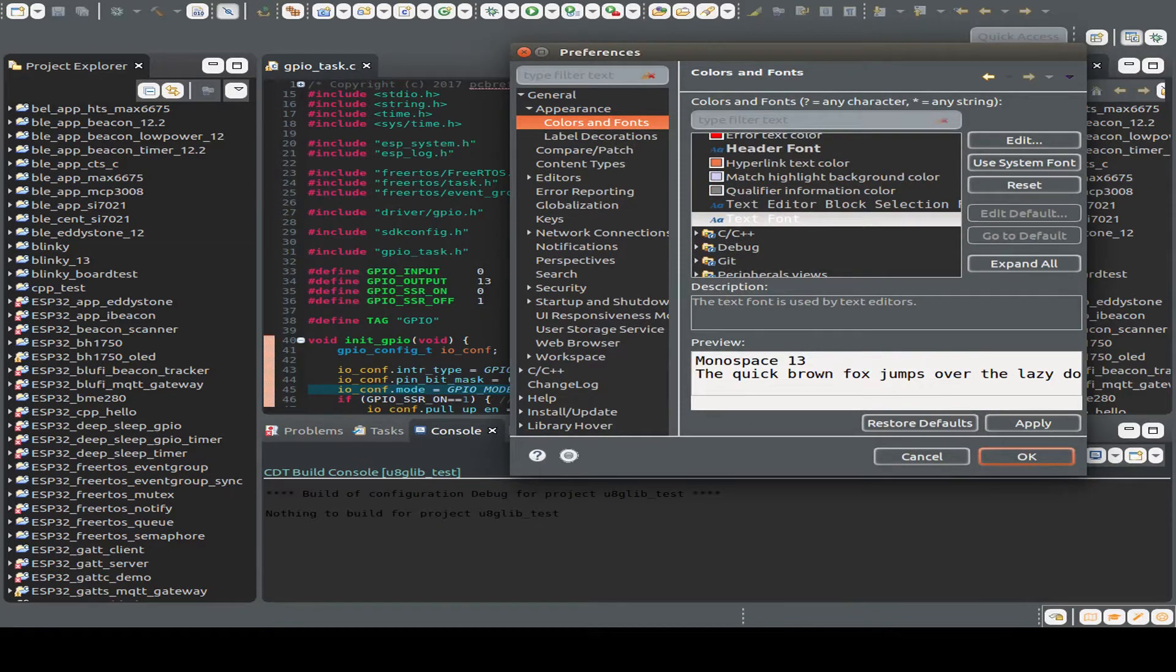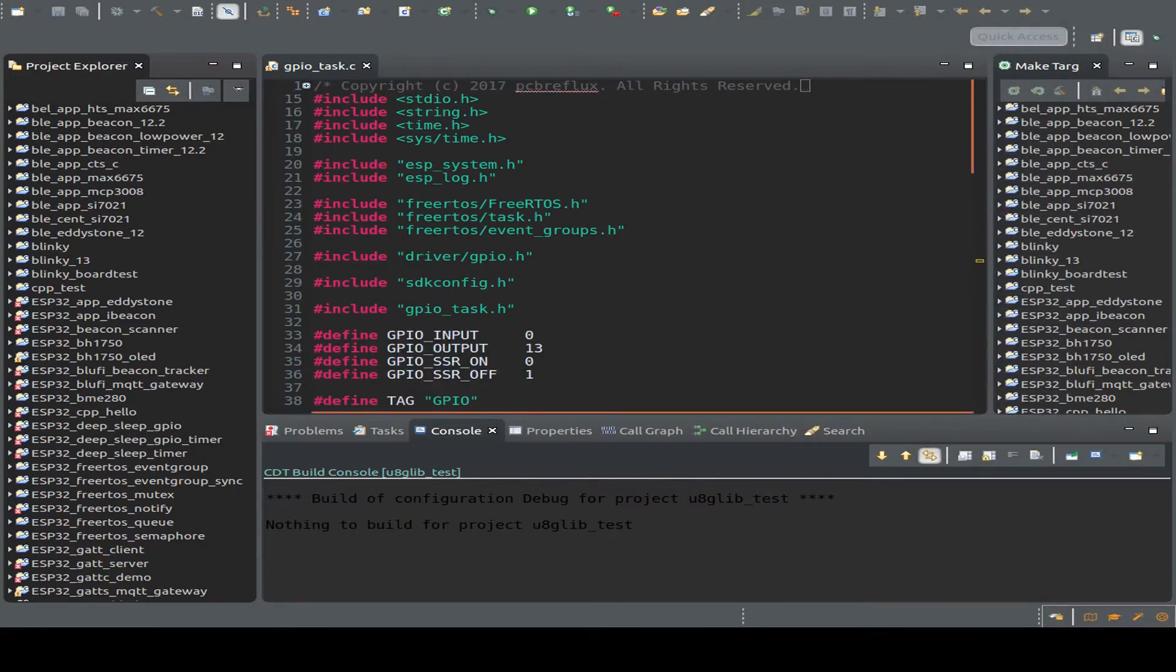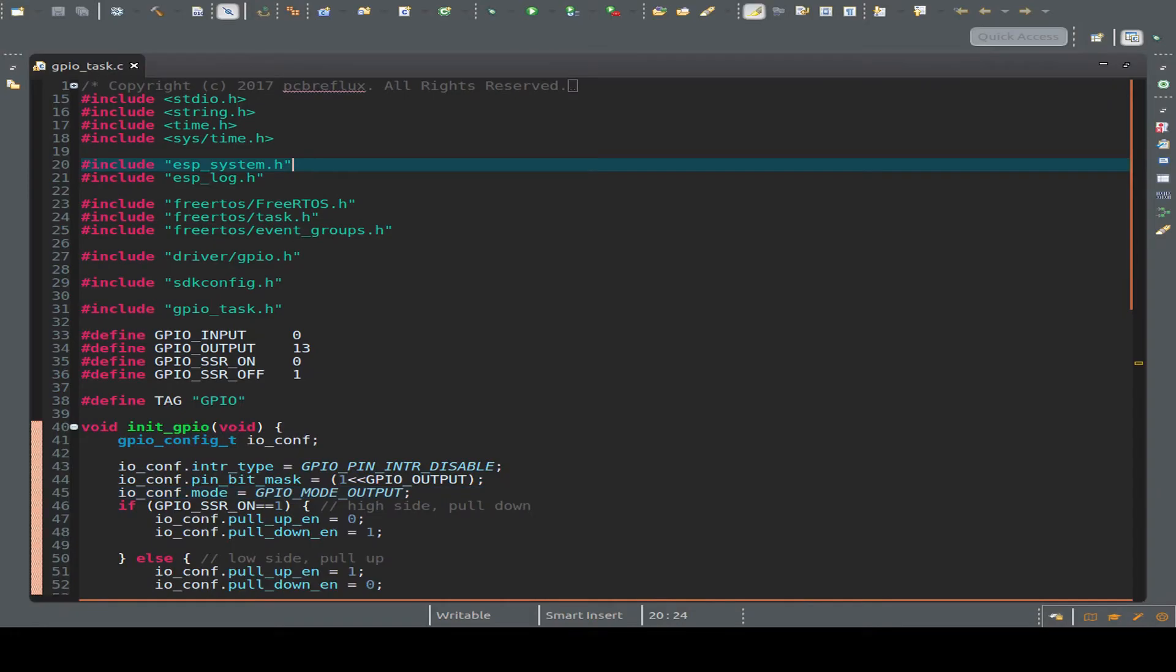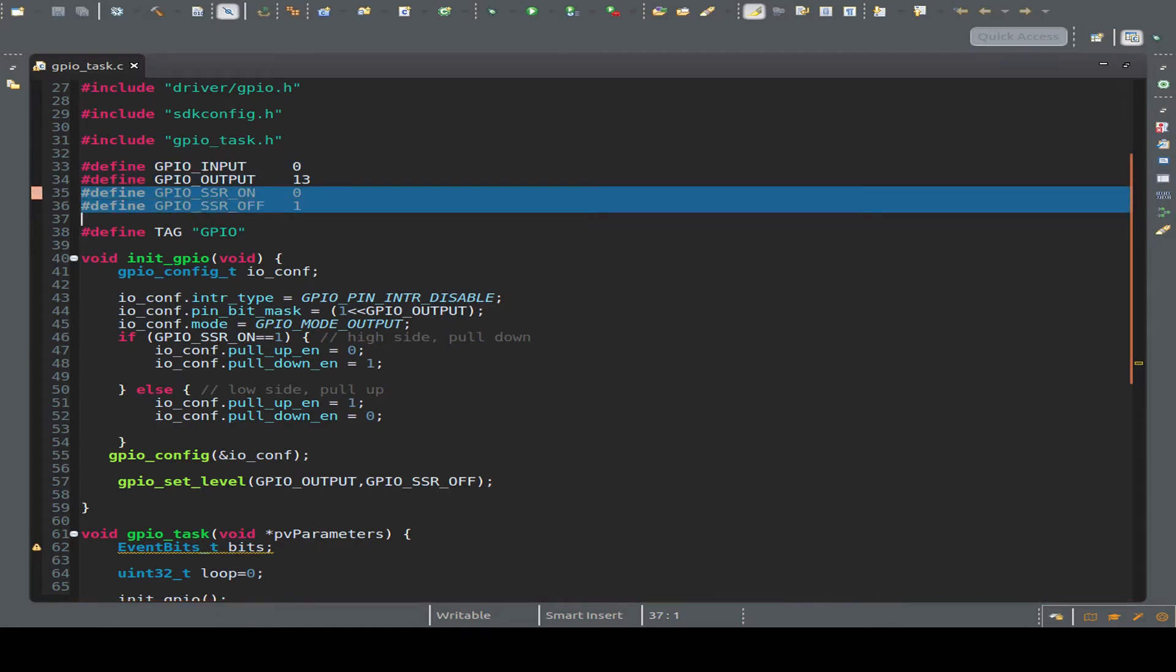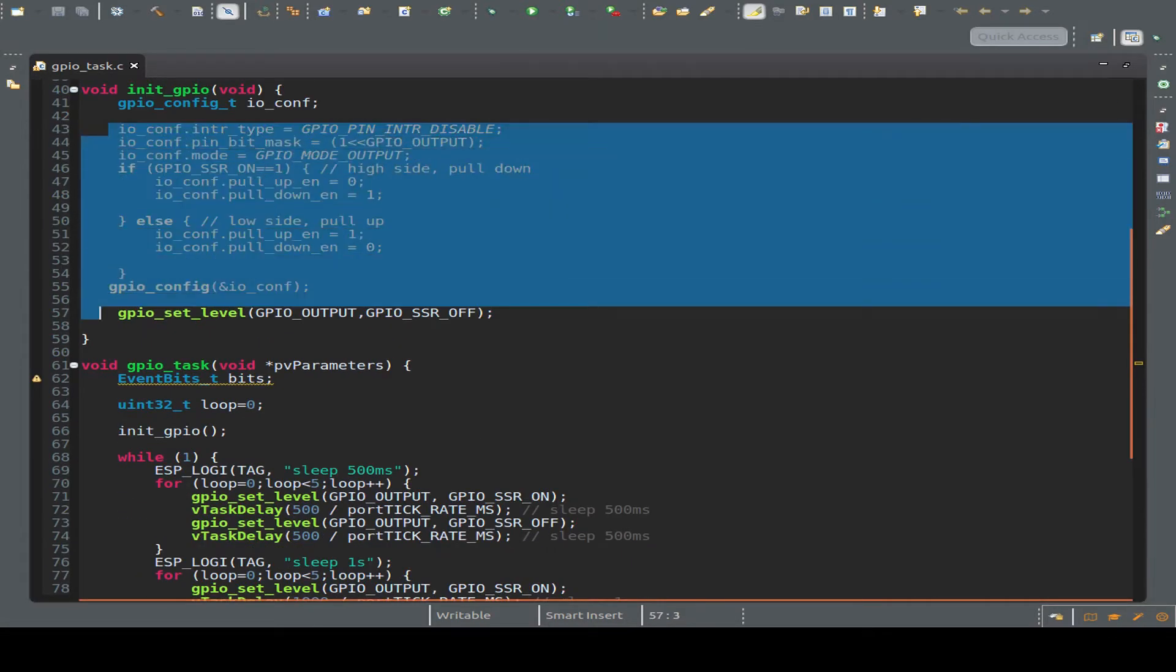So I just define my output pin and how to switch the solid state on or off. If we use the low side or the high side switching. And I configure my output pin as an output. And on high side, I configure a pull down.